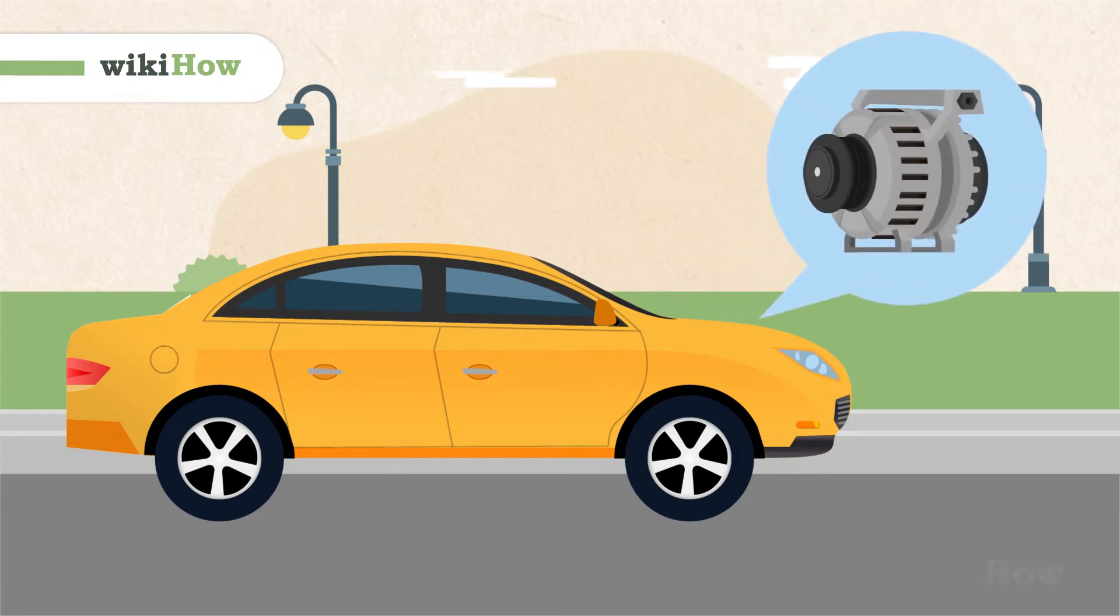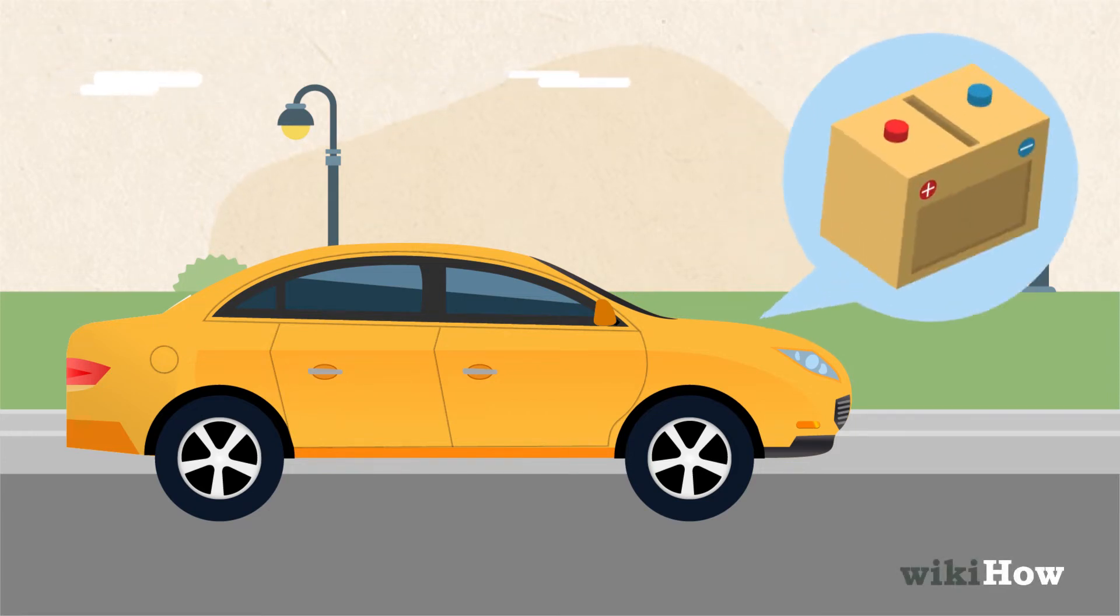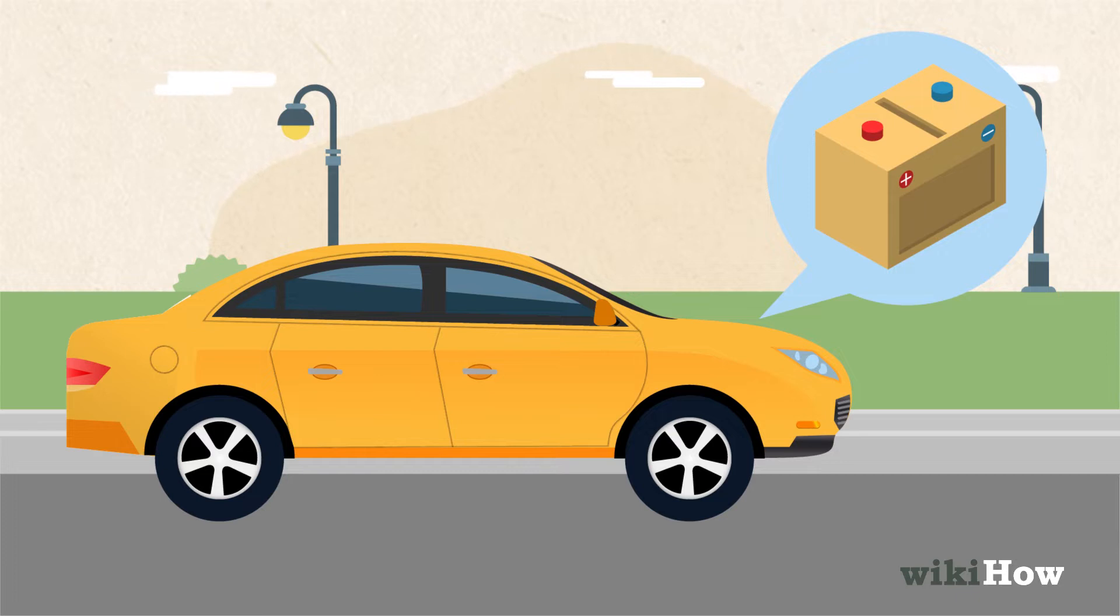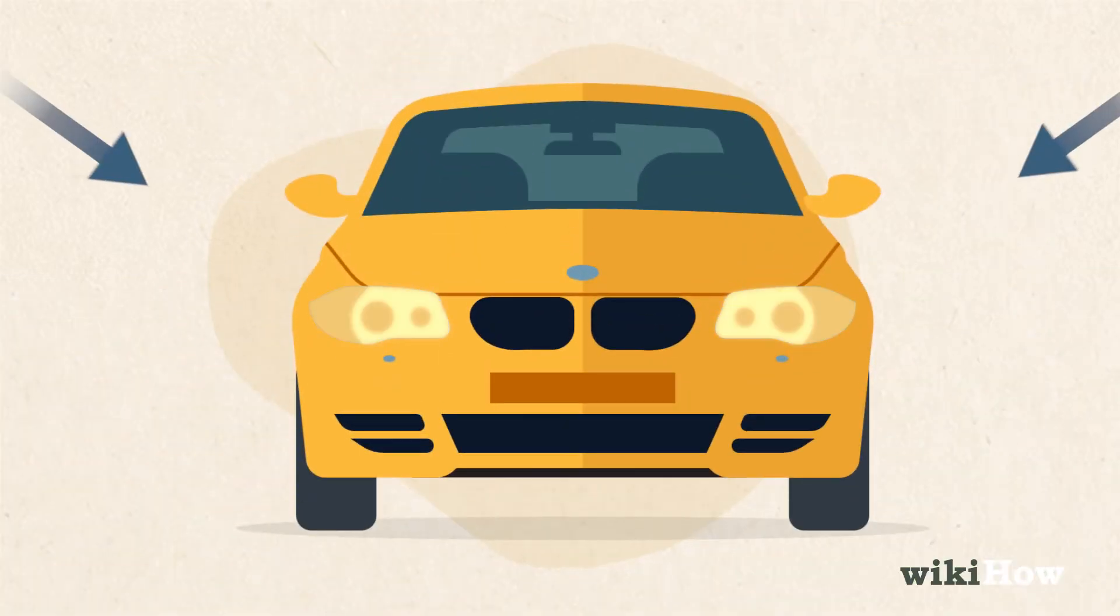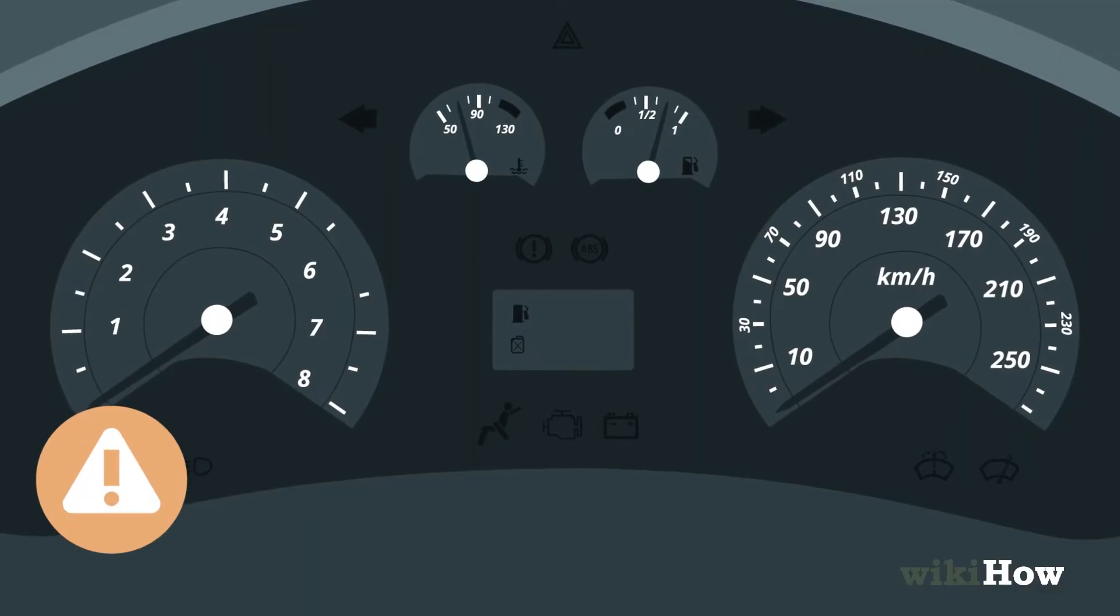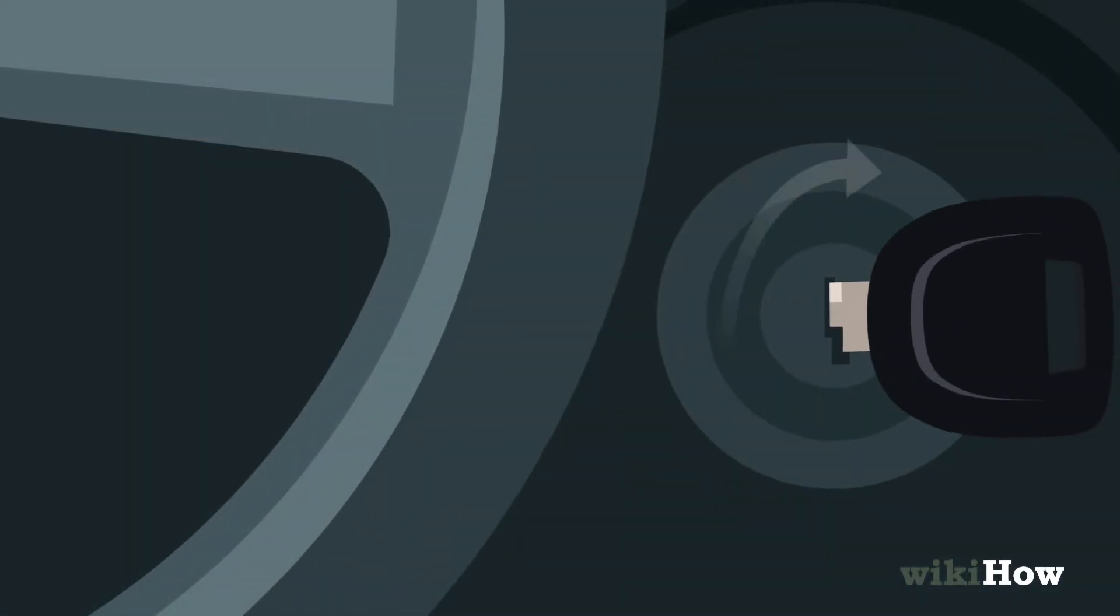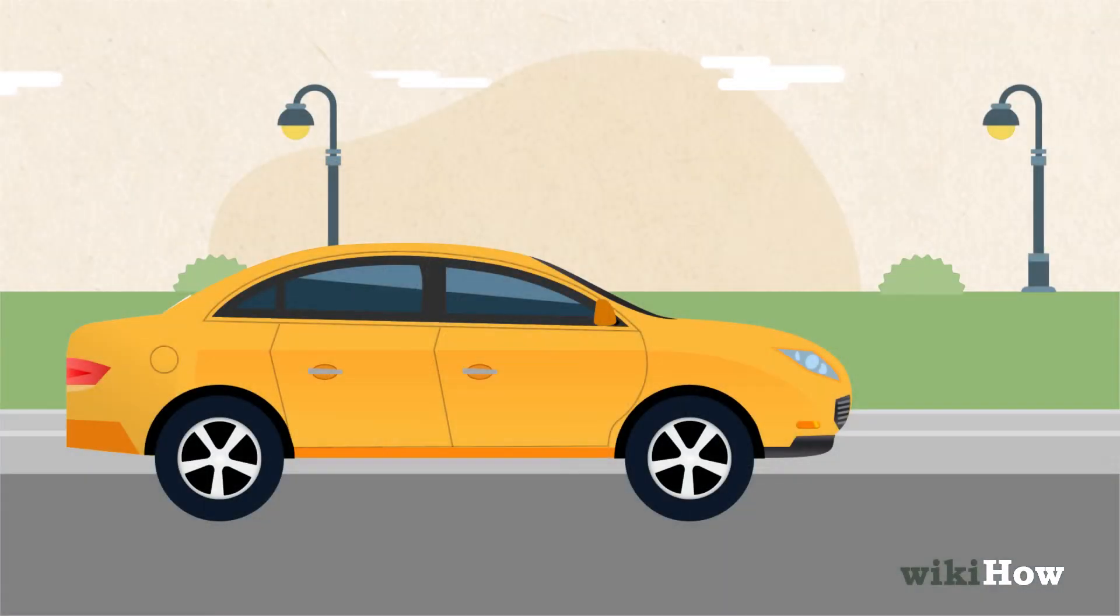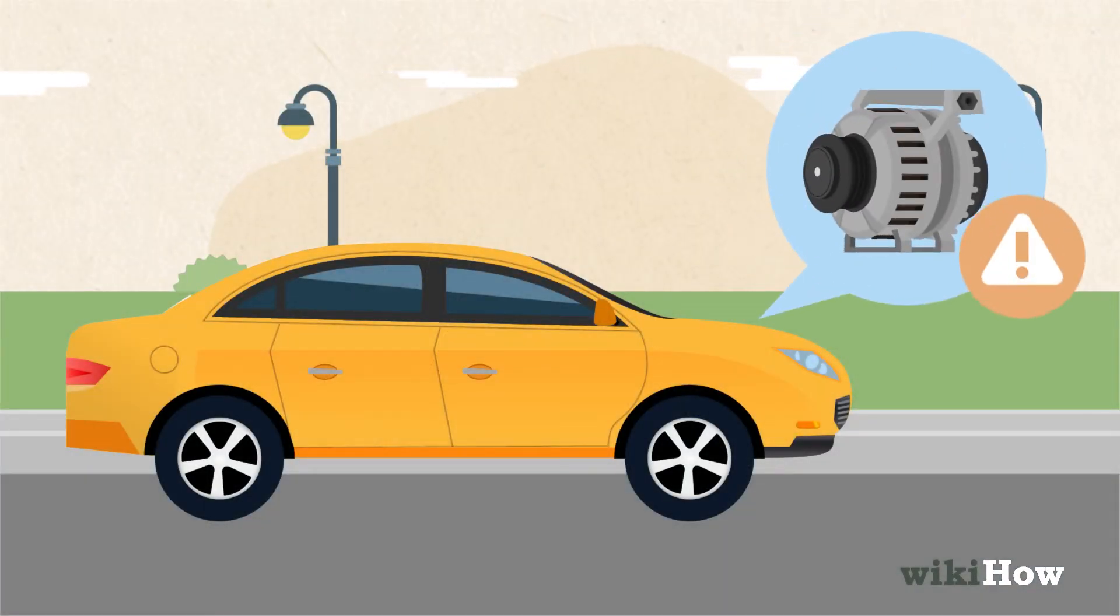The alternator in your car is responsible for recharging your car's battery and powering the electrical system. If your headlights aren't as bright as they usually are, your car's electrical system isn't working properly, or you're having trouble starting your car, those could all be signs that your alternator isn't working properly.